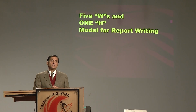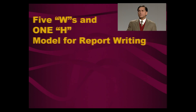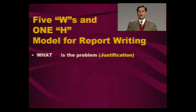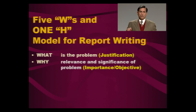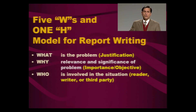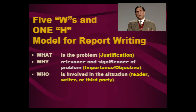Now I will share the five W's and one H model, which is internationally followed by many professional organizations for report writing. The first W stands for 'What' — what is the problem? Define the problem very clearly and precisely. Then 'Why' — why are you reporting? What are the importance or objectives? What will this report serve? Then 'Who' — who are the people involved: the reader, the writer, or maybe a third party?